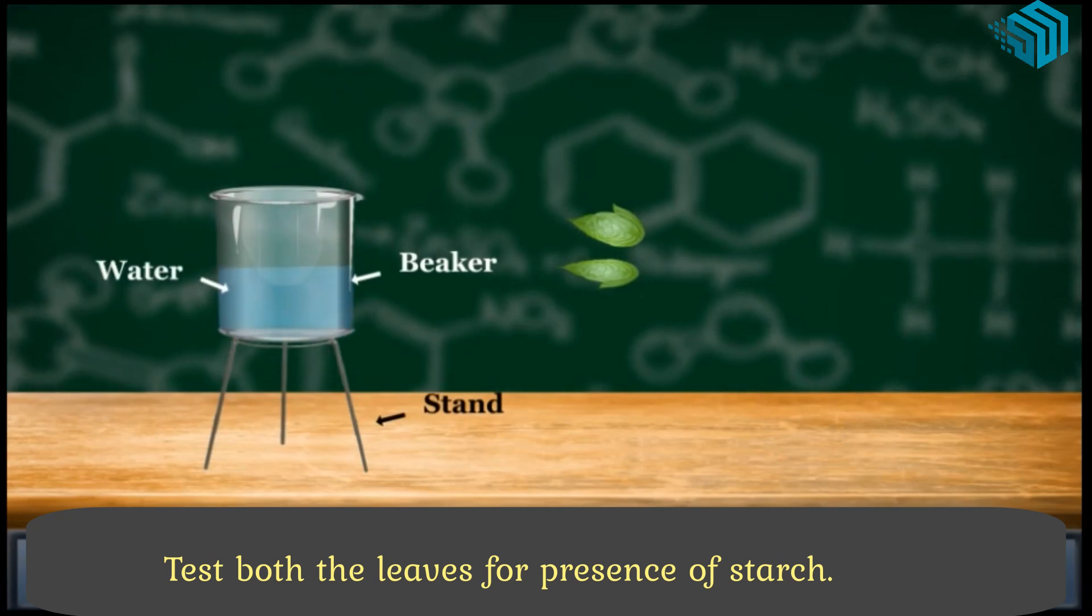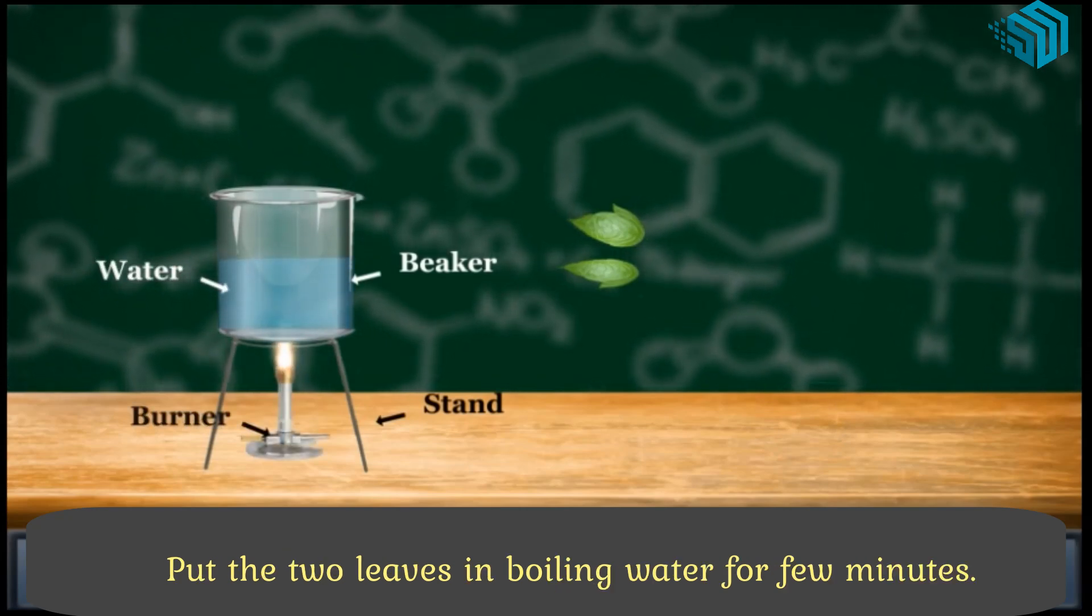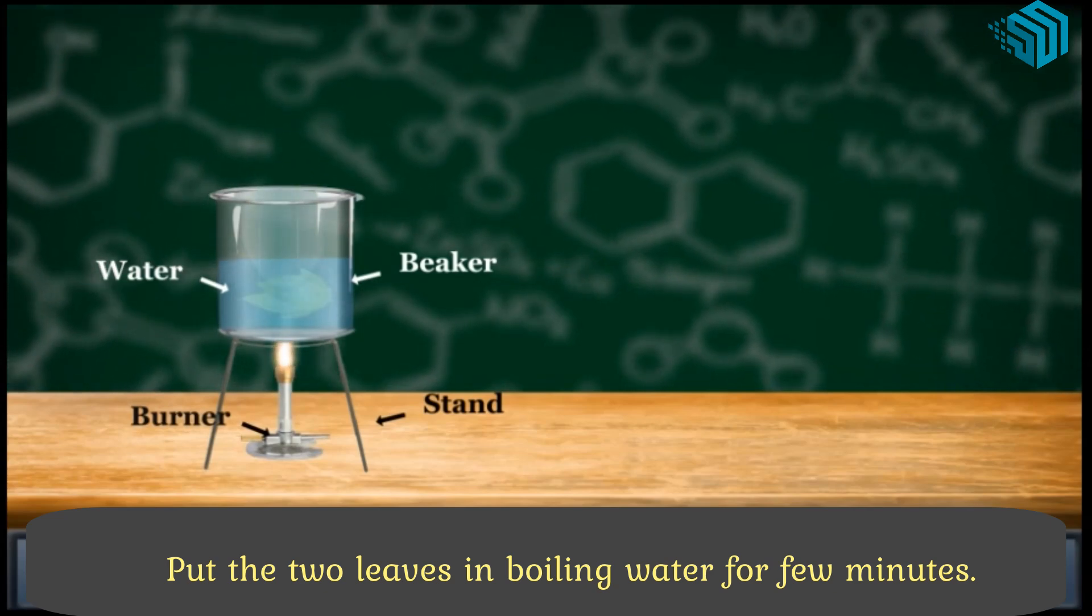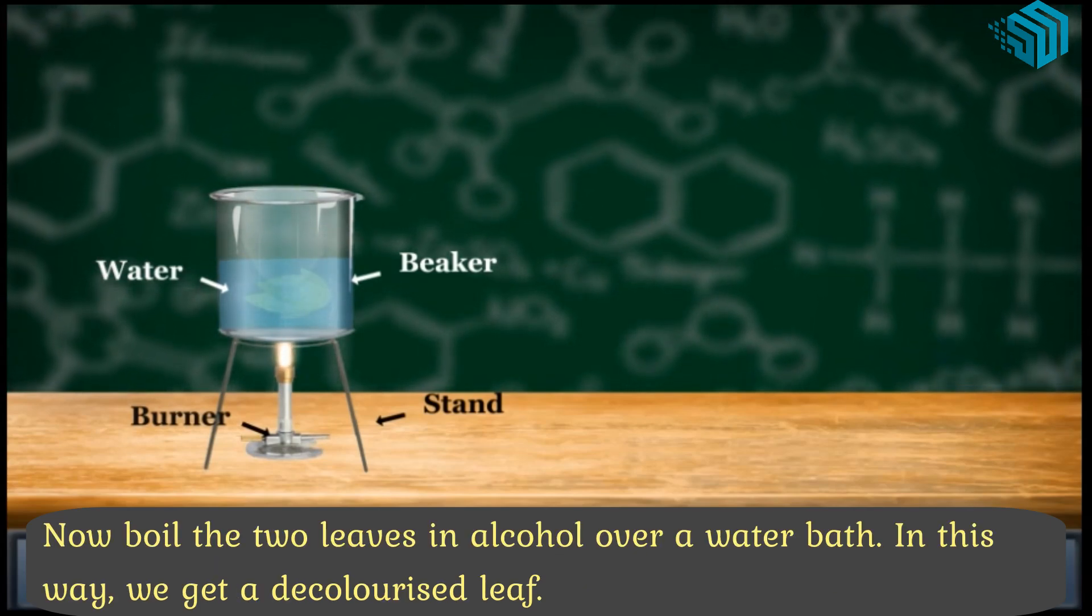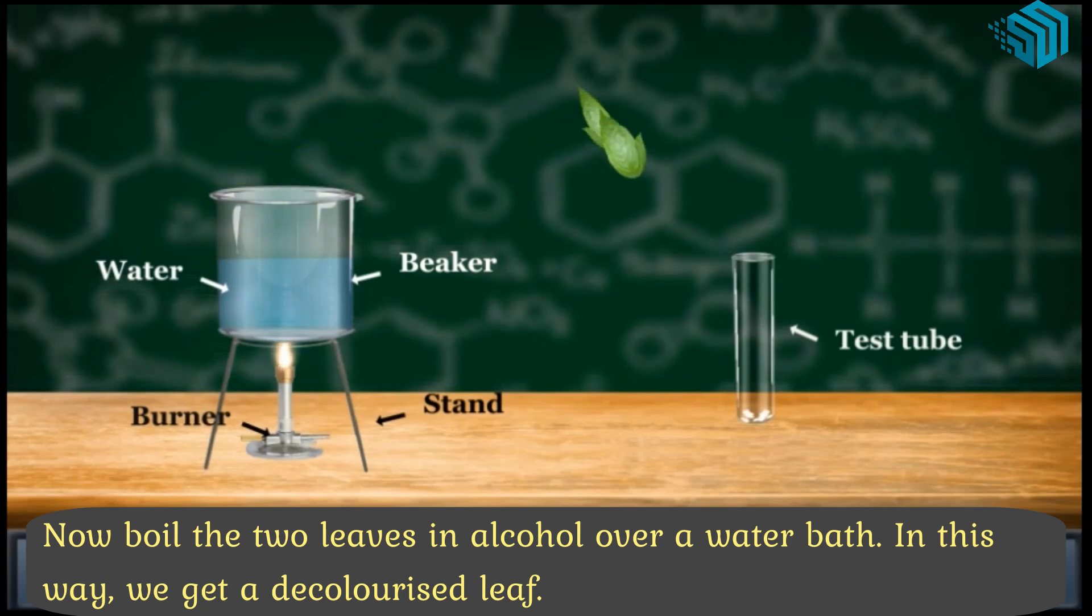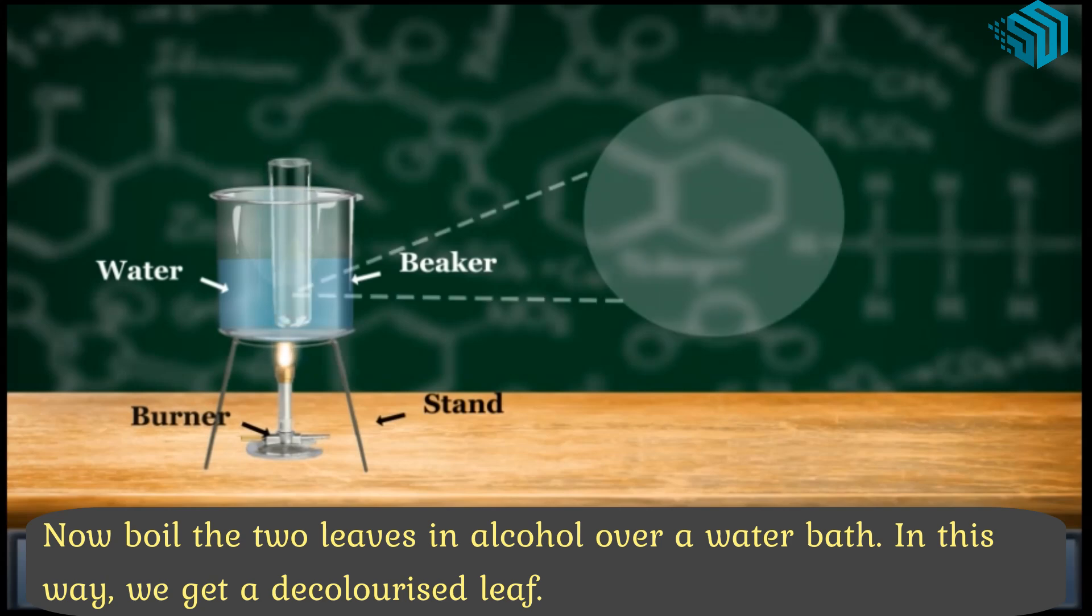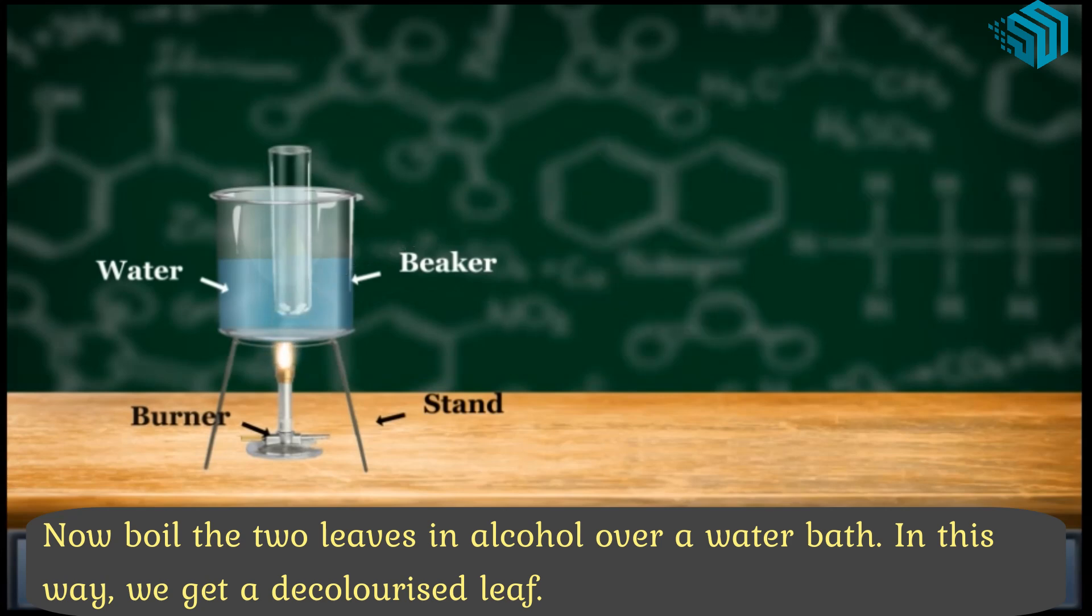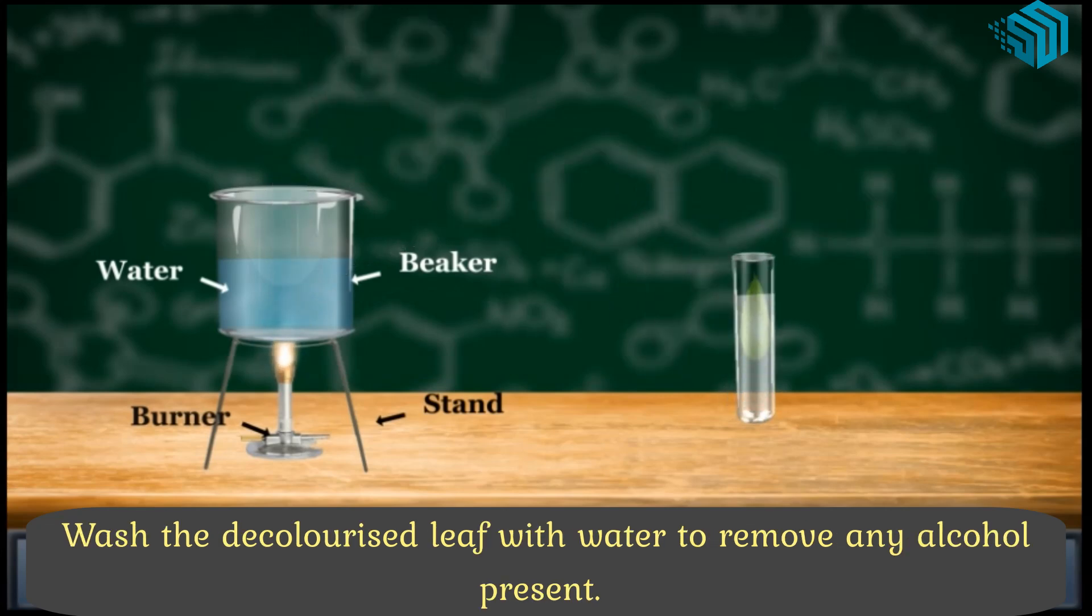Put the two leaves in boiling water for a few minutes. Now boil the two leaves in alcohol over a water bath. In this way we get a decolorized leaf. Wash the decolorized leaf with water to remove any alcohol present.